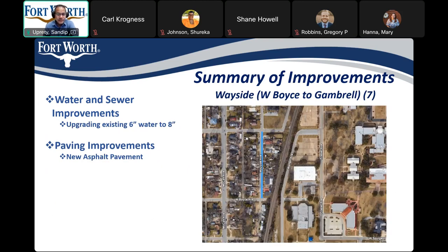Now I'll go through the street improvements funded by the Water Department. West Side Avenue from West Boise to Gambrel Street is within the scope of the Water Department. The proposed improvements include water and sewer improvements that upgrade the existing 6-inch water to 18-inch water line. The paving improvement includes new asphalt pavement. We will not replace curb and gutters, driveways, and sidewalks unless they are in bad shape or damaged during construction. The proposed improvements for Water Department-funded streets are similar to each other.